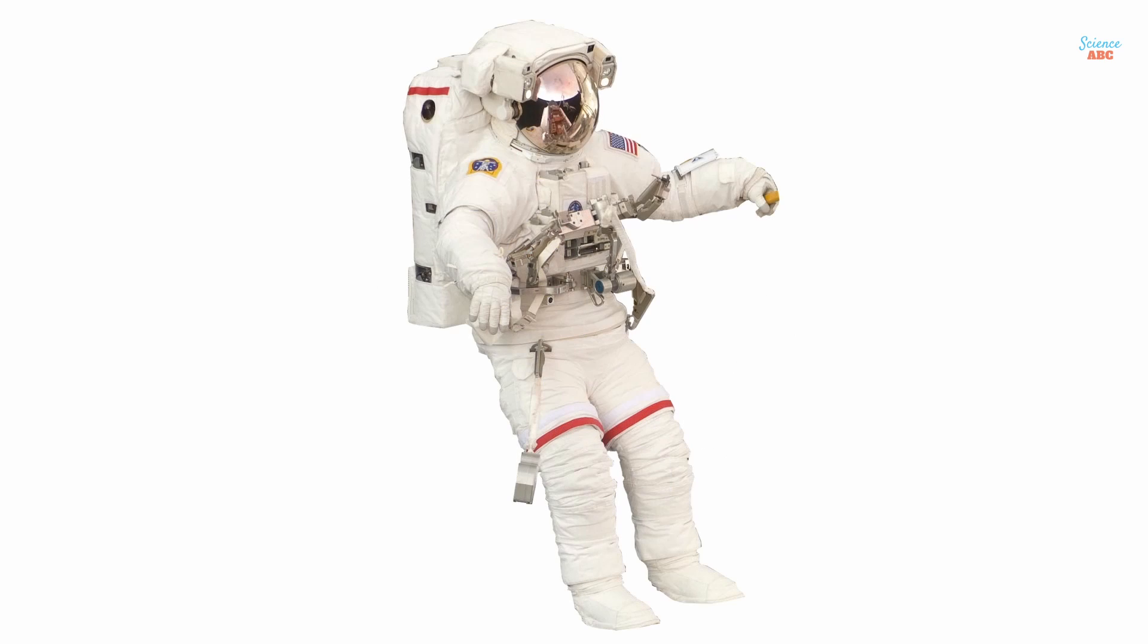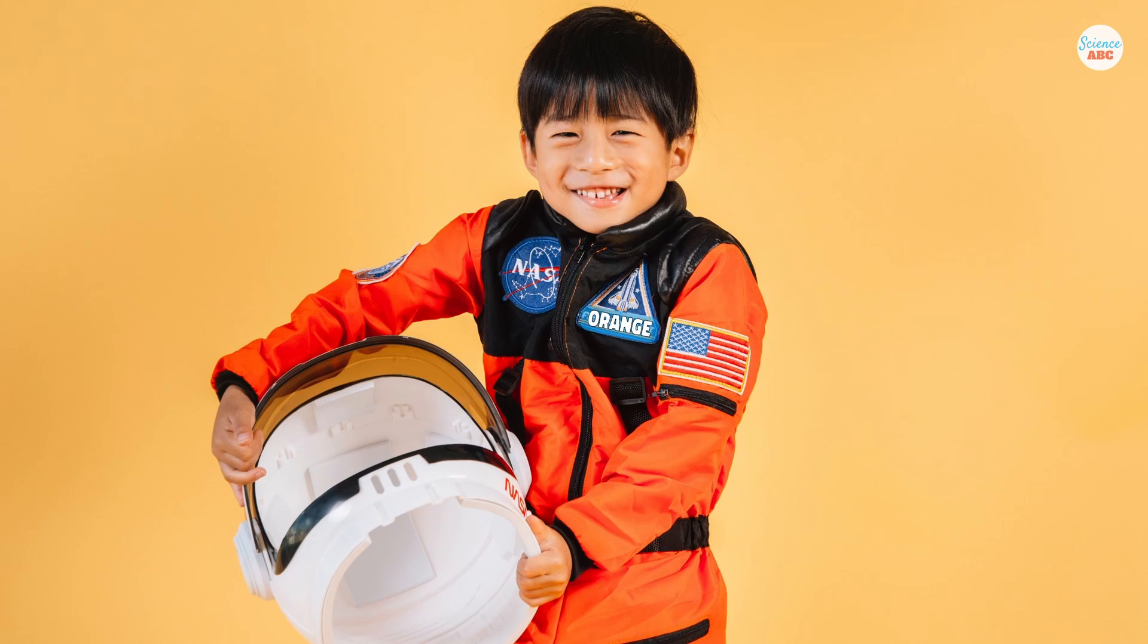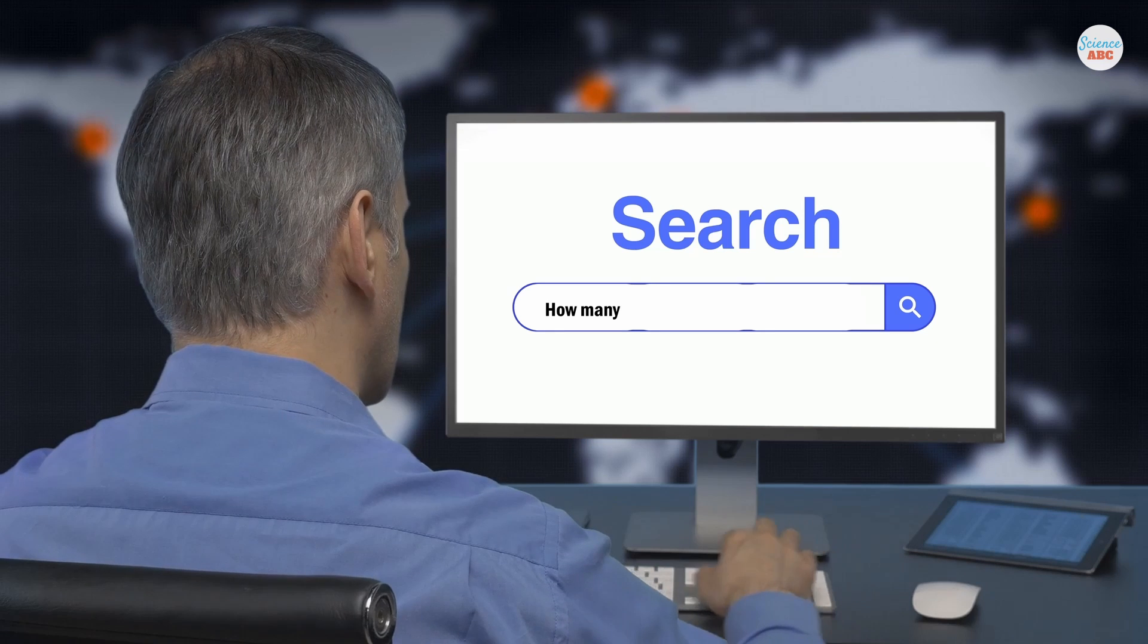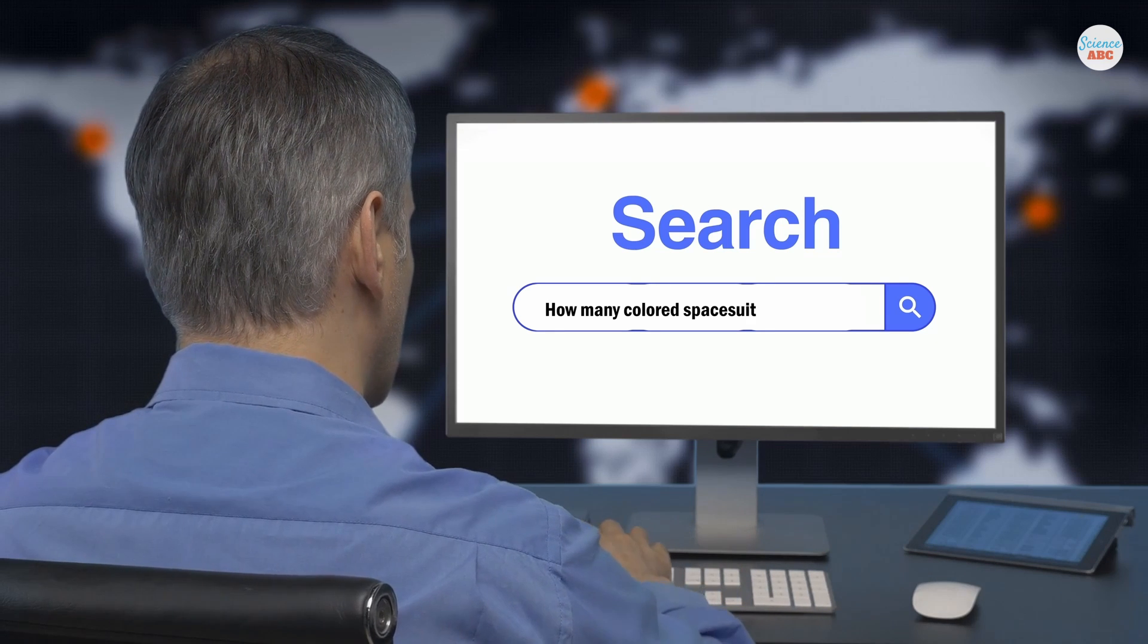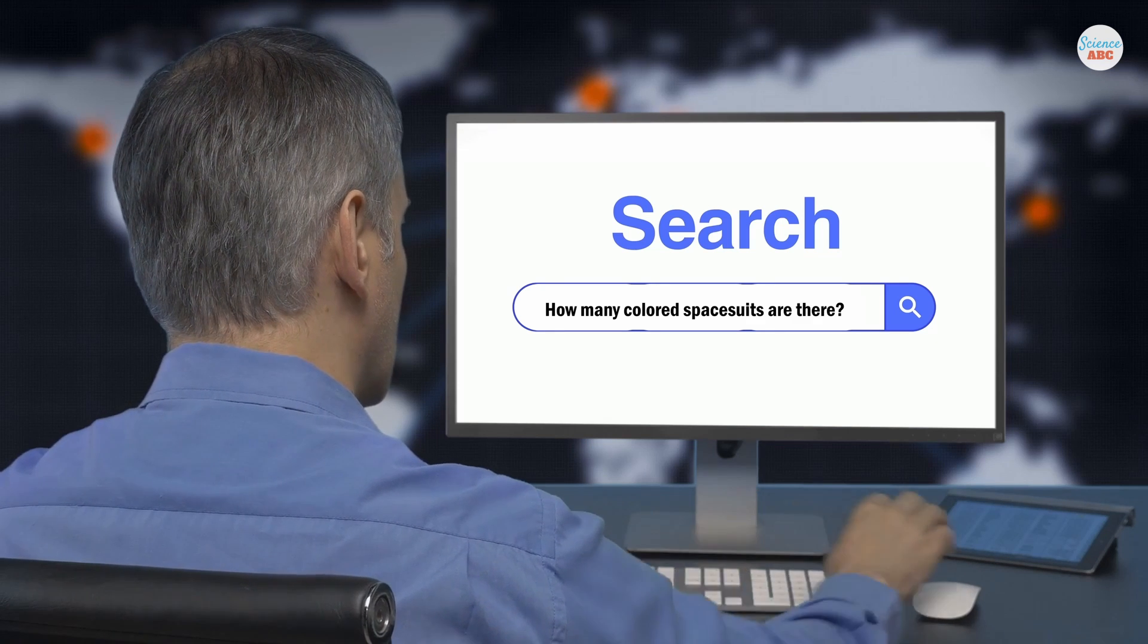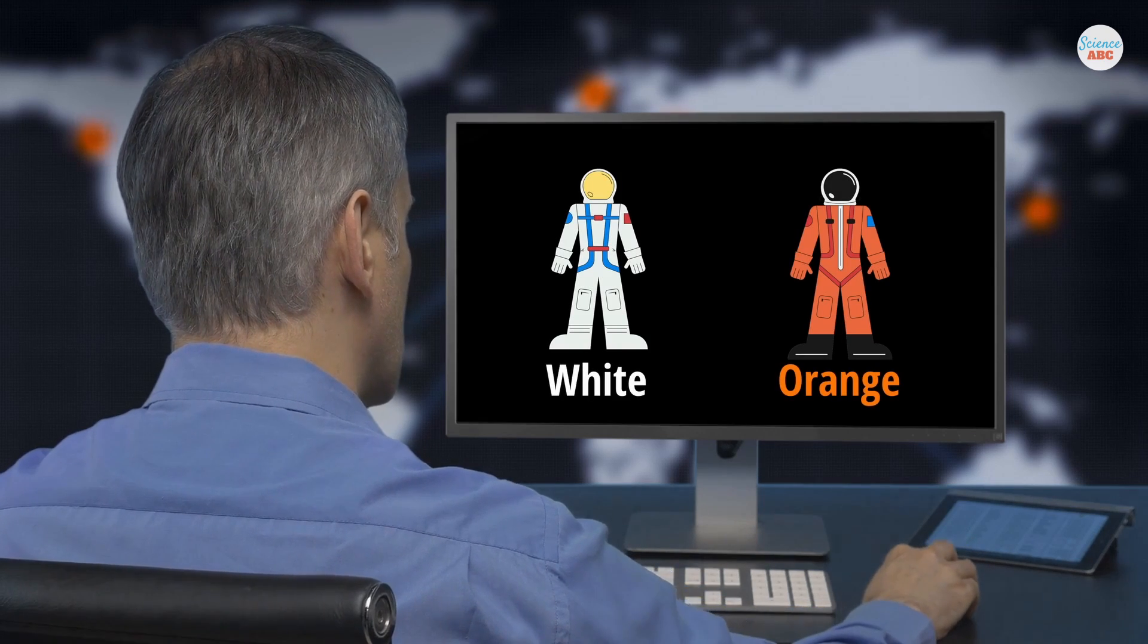I'm sure many of you also associate the color white with spacesuits, right? Or are you one of those who associate the color orange with spacesuits? Or perhaps you belong to an altogether different category of people who, when they think about spacesuits, can't help but wonder why white and orange are the only choices for space voyagers.